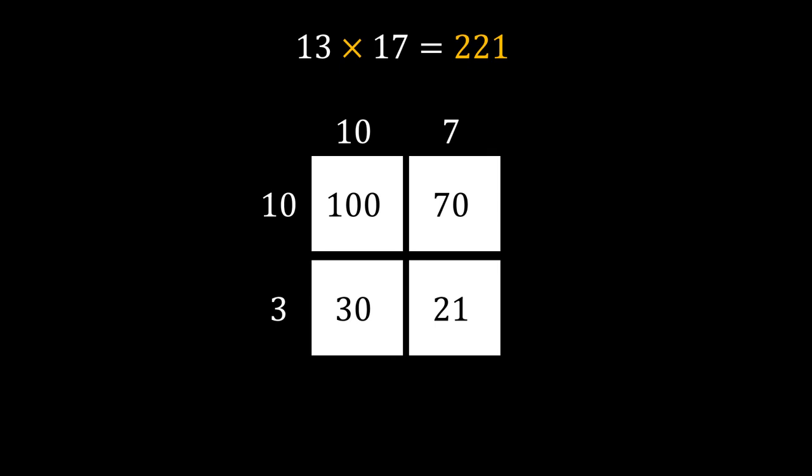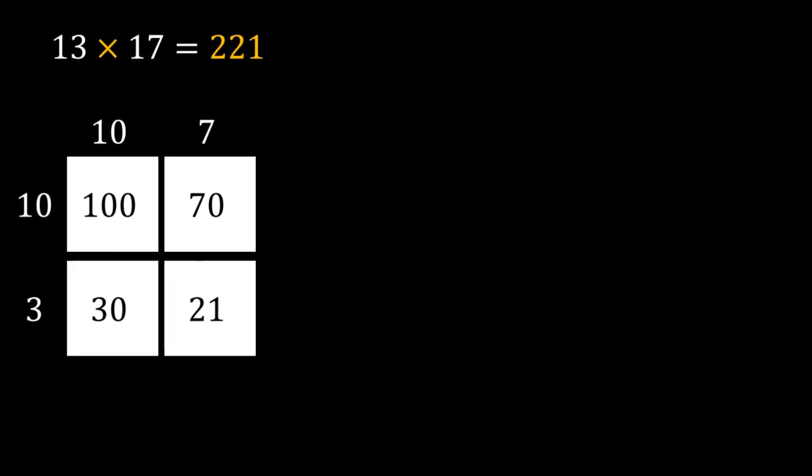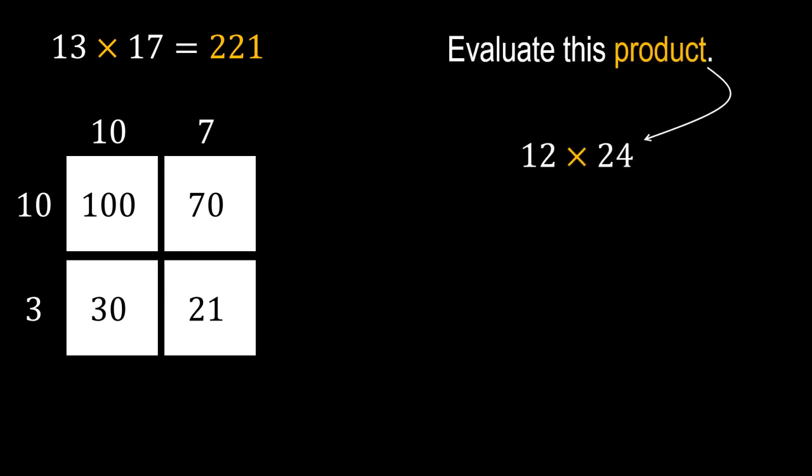So this is how we can make the 2-digit number multiplication simpler. Now try the one yourself like 12 times 24. Make sure you expand both the numbers to make this multiplication easier for you.